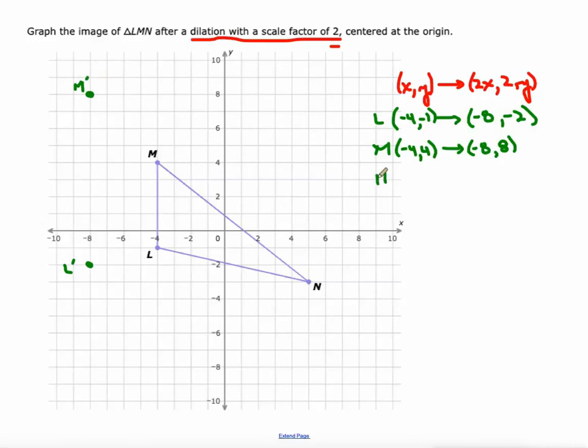And one more, N is currently at 5, negative 3. And we just multiply both those values by 2, and it becomes 10, negative 6. So there's N prime.